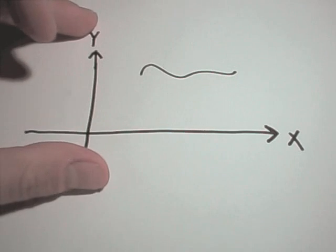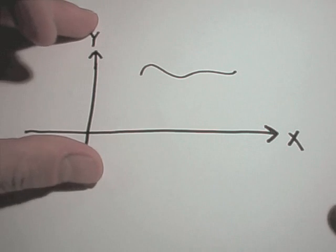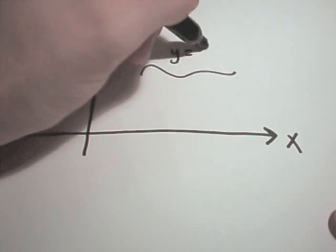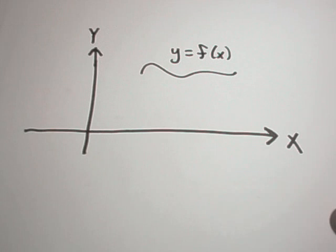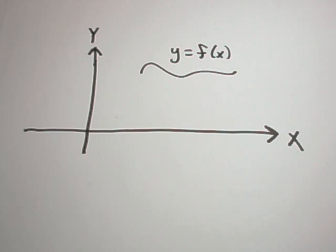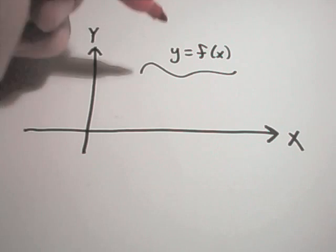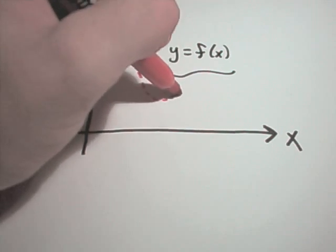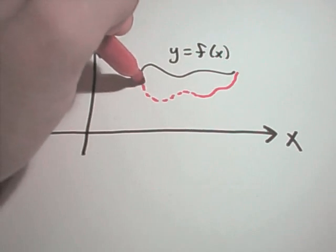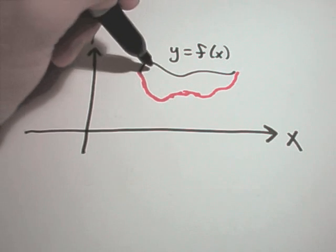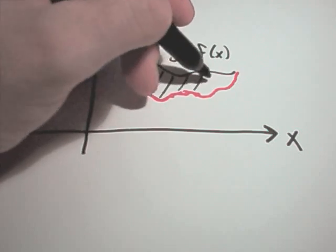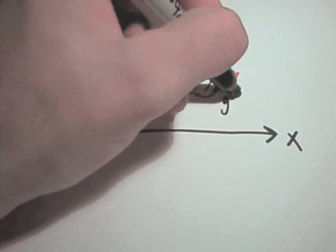We'll call one of them maybe f of x. So y equals f of x. And then maybe we have another curve, we'll call that one g of x. And let's make g of x the smaller one. And what we're trying to do is find the area, the space trapped between those two curves. So again, here's g of x.